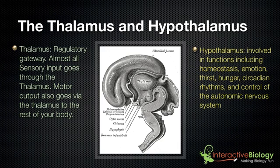The hypothalamus — if you look at what this really means, 'hypo' means under, and 'thalamus' is of course the thalamus, so this is right beneath the thalamus. This is involved in functions including homeostasis, emotion, thirst, hunger, circadian rhythms, and control of the autonomic nervous system.